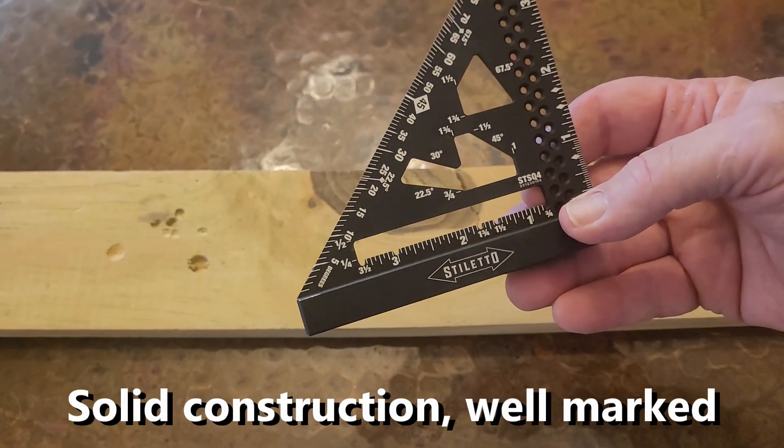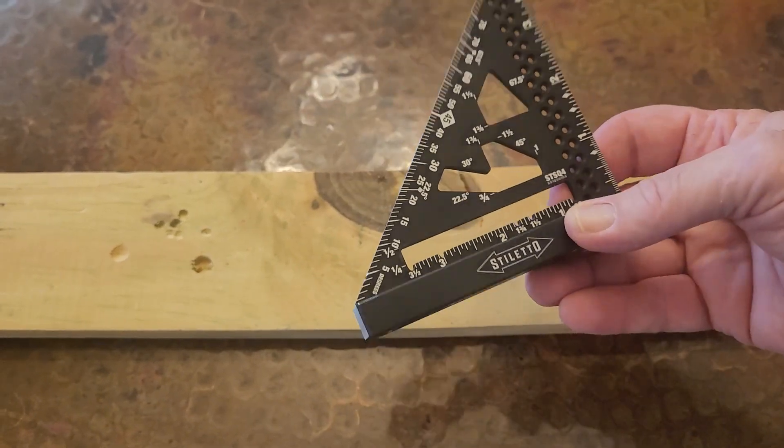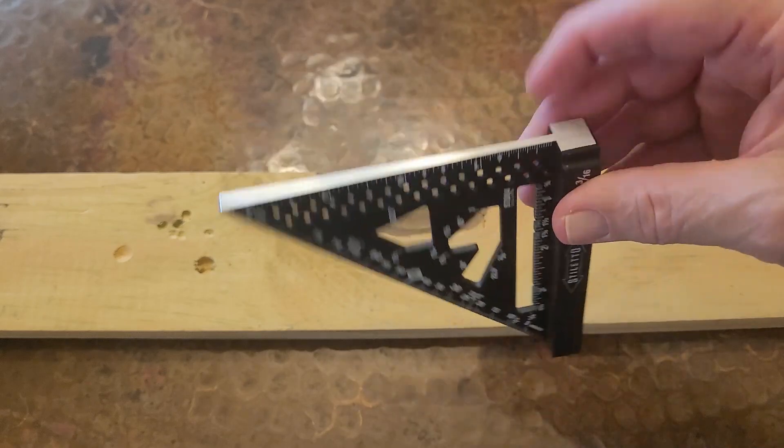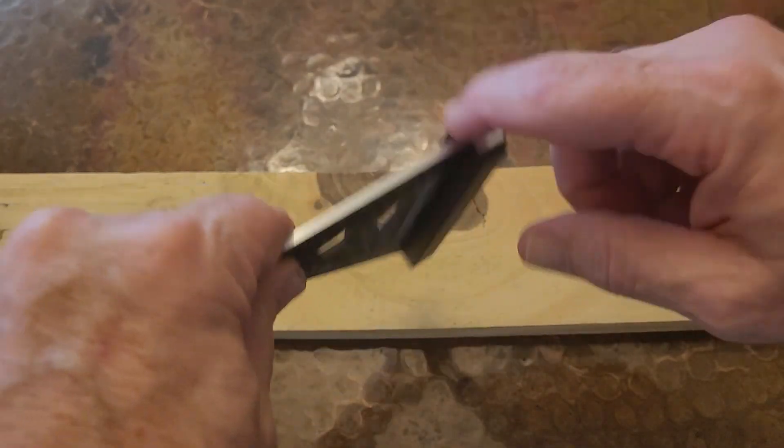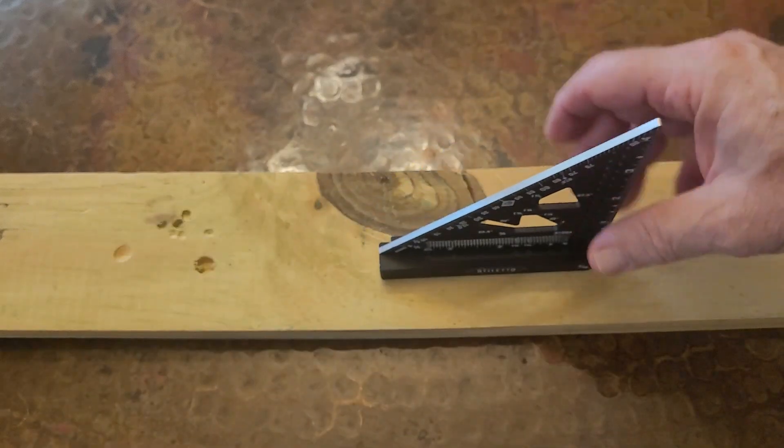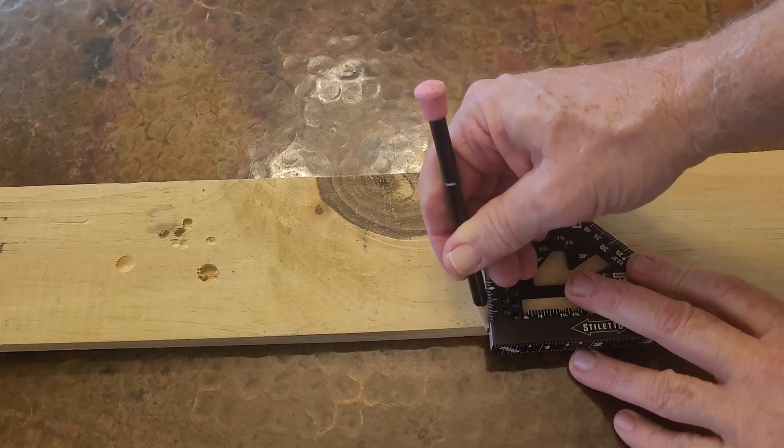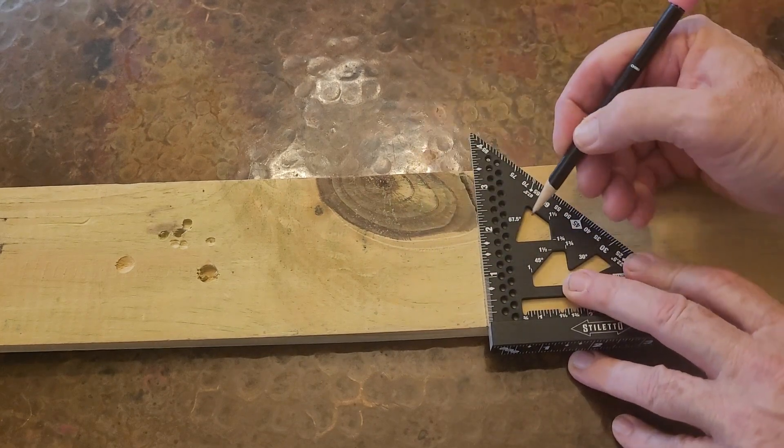This is the Stiletto STS Q4 measuring multi-angle guide. It's made of aluminum, it's not magnetic, and it's got a really solid core bottom. You can make a mark here, come across, and you'll see.